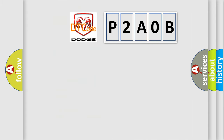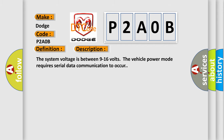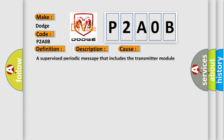So, what does the diagnostic trouble code P2A0B interpret specifically for Dodge car manufacturers? The basic definition is: Navigation Electronic Control Unit AQ, VIX communication circuit. The system voltage is between 9 to 16 volts. The vehicle power mode requires serial data communication to occur. This diagnostic error occurs most often when a supervised periodic message that includes the transmitter module availability has not been received.